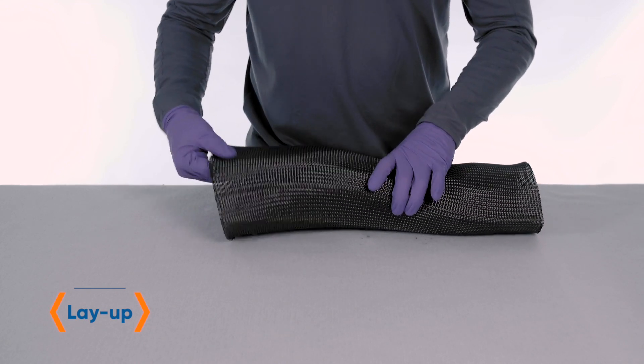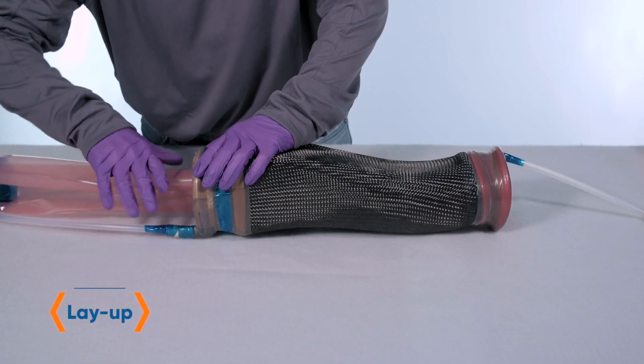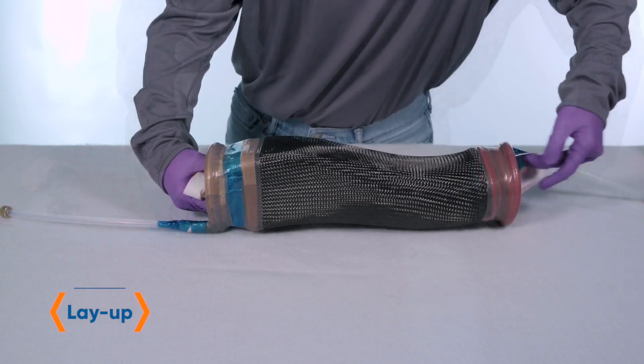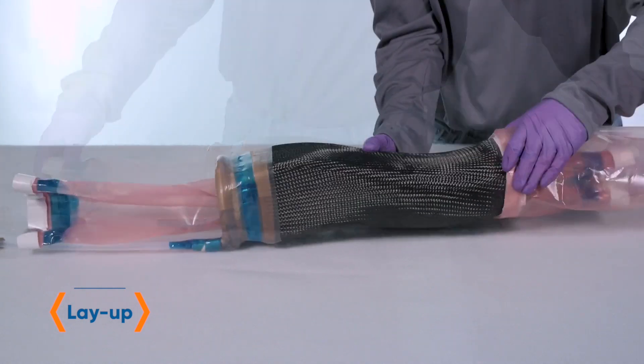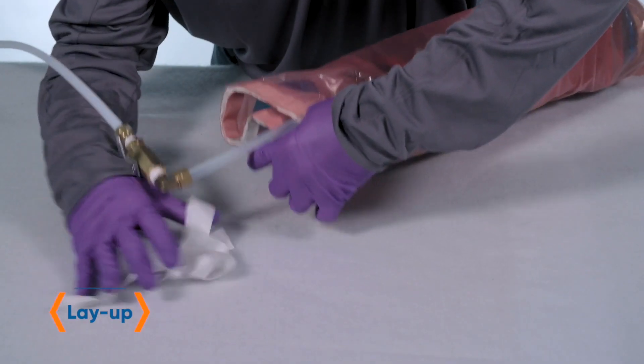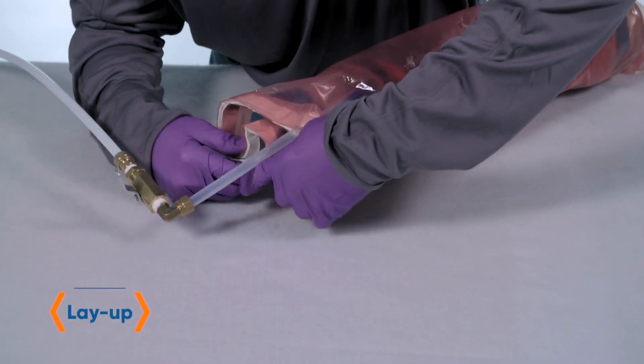After the dry carbon fiber sock has been pulled onto the Smart Tool, we then place the vacuum bag through and around the Smart Tool and seal with tape. This will maintain even vacuum during the cure cycle.